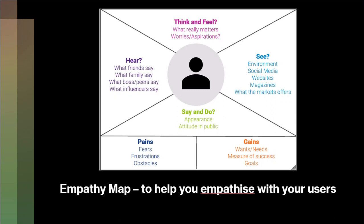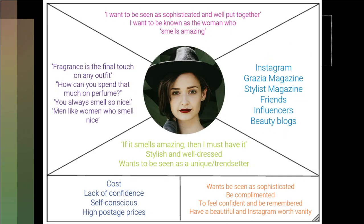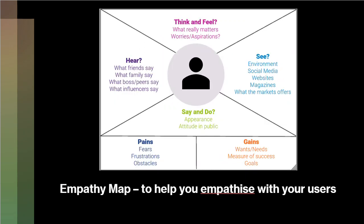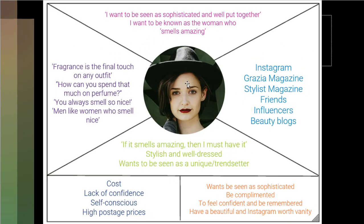Now let's look at one example of an Empathy Map for this lady. The first quadrant is Think and Feel. This is what this lady thinks and feels: 'I want to be seen as sophisticated and well put together. I want to be known as the woman who smells amazing.' This is what she thinks — she wants to appear sophisticated, well put together, and also smell amazing.